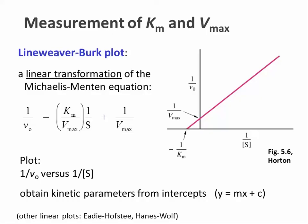Also, if you set 1 over V0 to 0 and rearrange for 1 over S, you get the x-axis intercept, which is minus 1 over Km. Try to do this rearrangement on paper. So you can obtain both kinetic parameters V0 and Km from the intercepts of the Lineweaver-Burk plot.